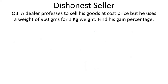Now a concept I didn't cover in earlier videos but is part of this chapter: the dishonest seller. These are tricky questions. A dealer professes to sell goods at cost price but uses a weight of 960 grams for one kilogram. Find his gain percentage.